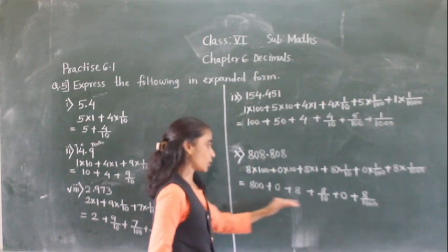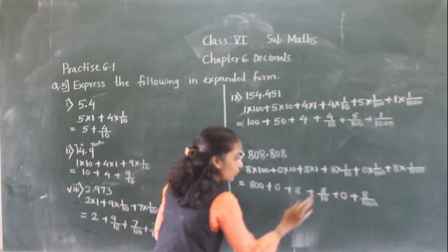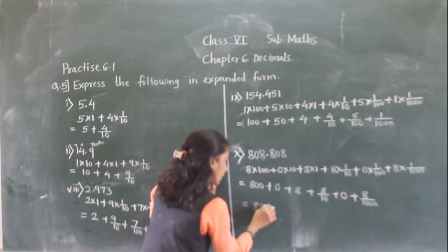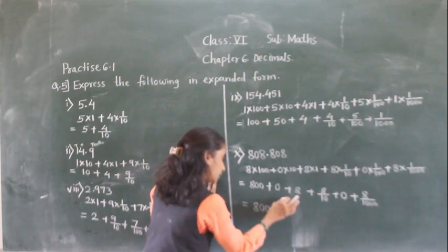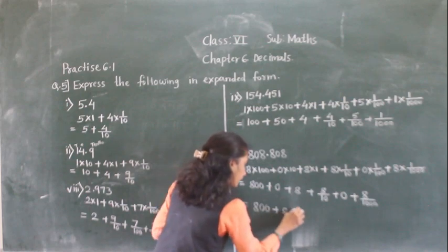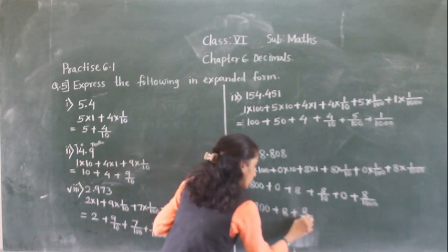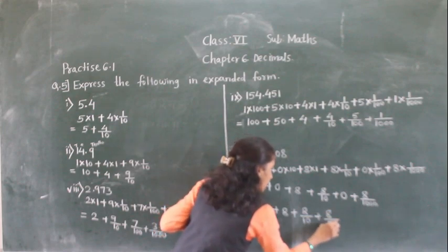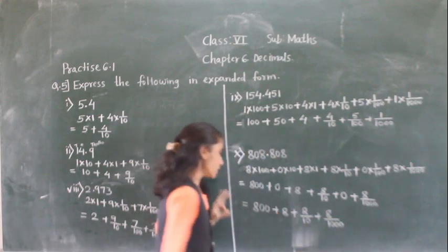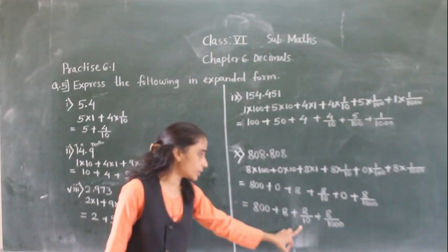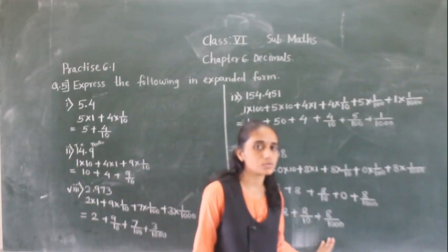If you get 0 you do not need to write it, so the answer is 800 plus 8 plus 8 upon 10 plus 8 upon 1000.